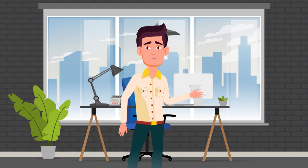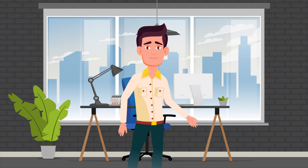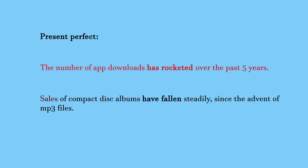Next, we have the present perfect, which describes an action that started in the past and continues up to the present. Here are two examples. The number of app downloads has rocketed over the past five years. Sales of compact disc albums have fallen steadily since the advent of MP3 files.